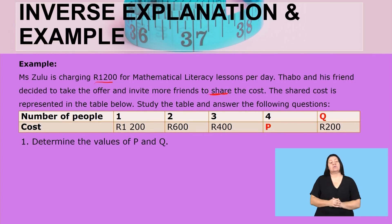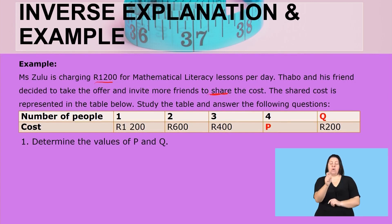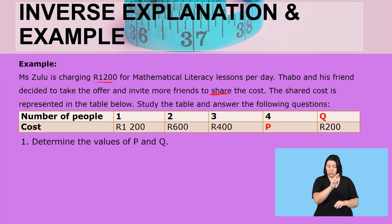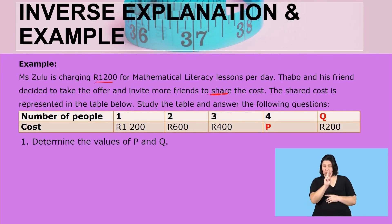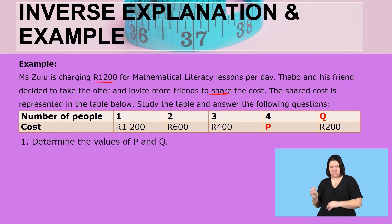Looking at the table, you can see that if we have Turbo only, it's 1,200. If it's Turbo and one friend — they are two — it's 600 rent. If he has two friends, it's 400 rent. So the more the number of friends increases, the more the cost becomes less. That is what is happening when you share a fixed cost.